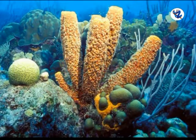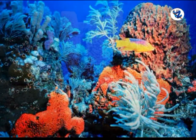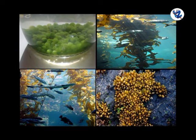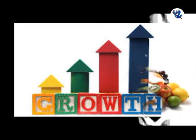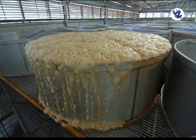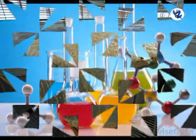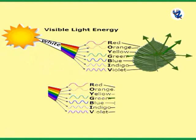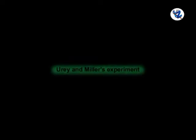Biological evolution: The first or primitive cells were marine and heterotrophic in nature. They obtained their food from the surrounding area. Growth and multiplication of these cells caused depletion in the food and increased CO2 due to fermentation. This resulted in the development of chromophores, which had the ability to trap light energy and convert it into chemical energy.